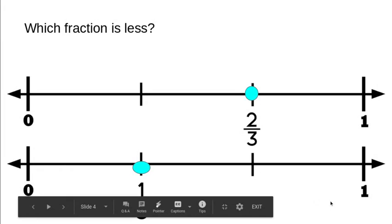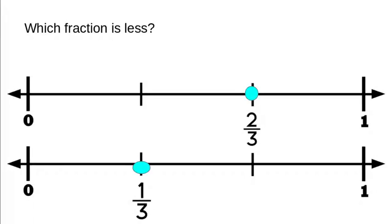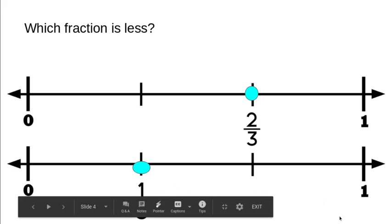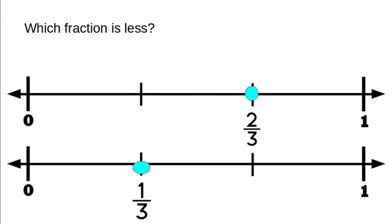This one asks which fraction is less. We have two number lines broken up into the same increments — they're both broken up into thirds. This fraction is two thirds and this fraction is one third. Which fraction is less would be the one closer to zero, because then there would be another fraction that's closer to the whole. One third is less than two thirds, and you can see that by the picture.